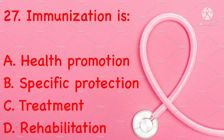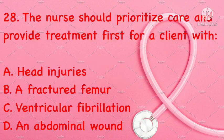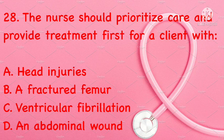Immunization is: health promotion, specific protection, treatment, or rehabilitation. Correct answer is B: specific protection. The nurse should prioritize care first for a client with: head injuries, a fractured femur, ventricular fibrillation, or an abdominal wound. Correct answer is C: ventricular fibrillation.